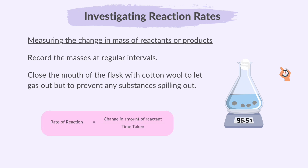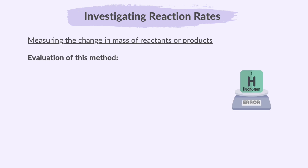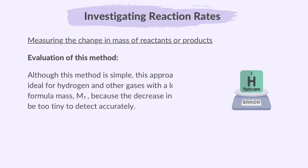Then, we can use the following equation to find the rate of reaction. Although this method is simple, this approach isn't ideal for hydrogen and other gases with a low relative formula mass, because the decrease in mass might be too tiny to detect accurately. So some gases are so light that you won't even notice a change in mass.